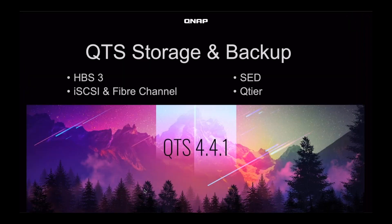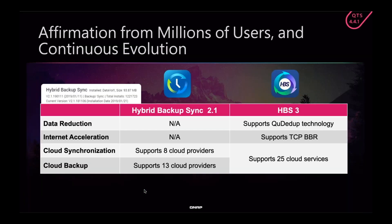We have a more advanced storage and backup solution. Hybrid Backup Sync now has data deduplication, we support Fiber Channel, we support SED self-encrypting SSDs, and you can remove a Q-tier pool without losing your data. Comparing the new Hybrid Backup Sync to the old: we now have QD-dupe data deduplication, we support TCP BBR which allows you to send data faster through the internet, and whereas we used to support 8 cloud providers for synchronization and 13 for backup, now we support 25 services for both backup and synchronization.